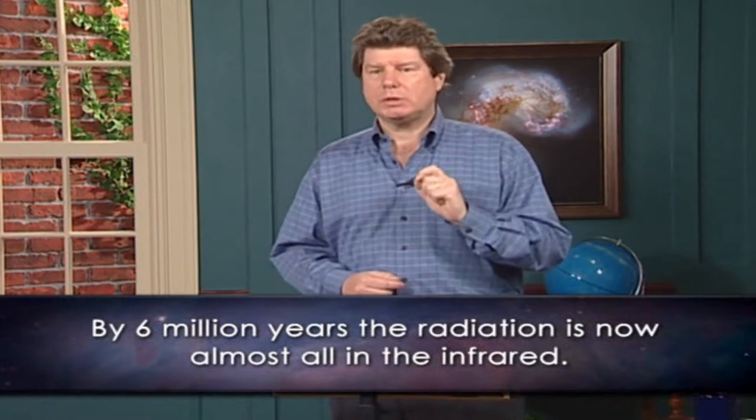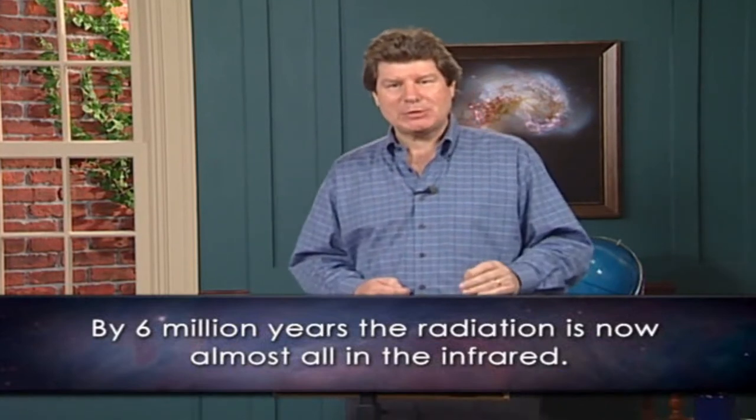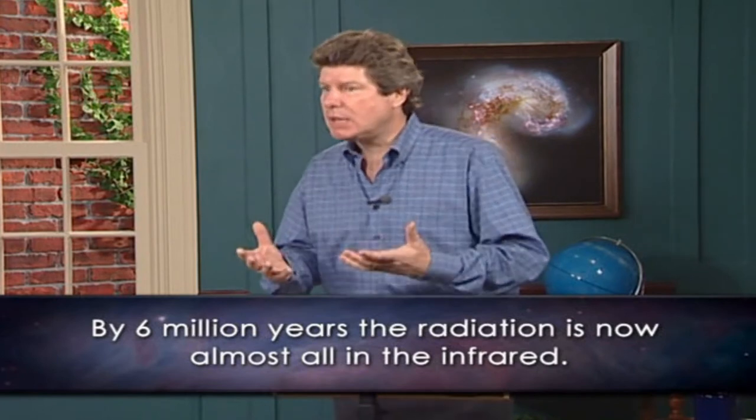What was it like back then? From fog clearing to 100 million years is a new period. Expansion continues to redshift the photons, so the light in the universe gets redder, dimmer and cooler. By 6 million years, the radiation is now almost all in the infrared, and for the first time in cosmic history the entire universe would be dark to our eyes — everywhere pitch black, not a single photon of optical light remaining. For this reason, this marks the beginning of what cosmologists call the Dark Age.